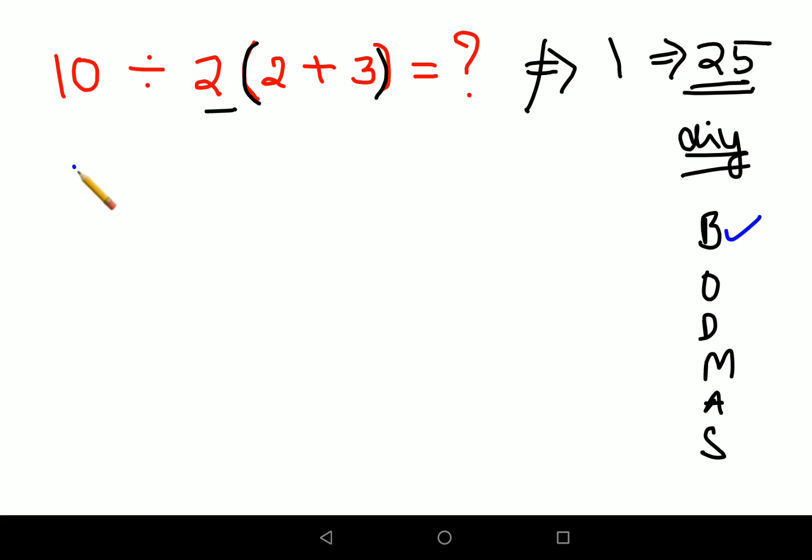So here we will do 10 divided by 2 and what is the bracket? 2 plus 3 that gets you 5. Now since the bracket is solved and there is no sign between the 2 and the bracket, the operation to be done over here is multiplication.